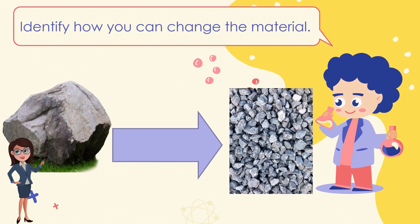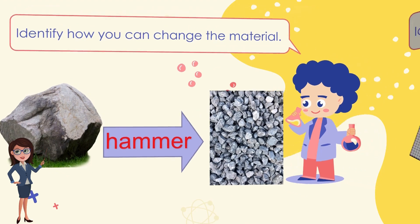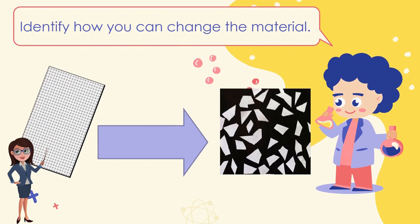When solid materials are cut, their size and shape may change, but no new material is formed. Identify how you can change the material — Hammer. You got it right! Identify how you can change the material — Cut. Bravo!